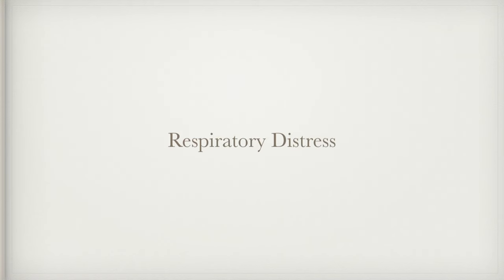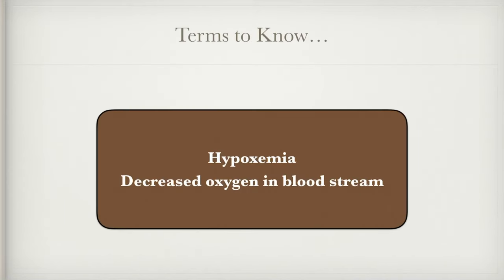Respiratory distress means they are getting enough oxygen in and enough CO2 out to function, but they're having a hard time. Hypoxemia is an important word: hypo means low, ox is oxygen, emia is blood — so it's a low level of oxygen in the blood, or decreased oxygen in the bloodstream. We use hypoxemia and hypoxia somewhat interchangeably, although they are technically separate terms.